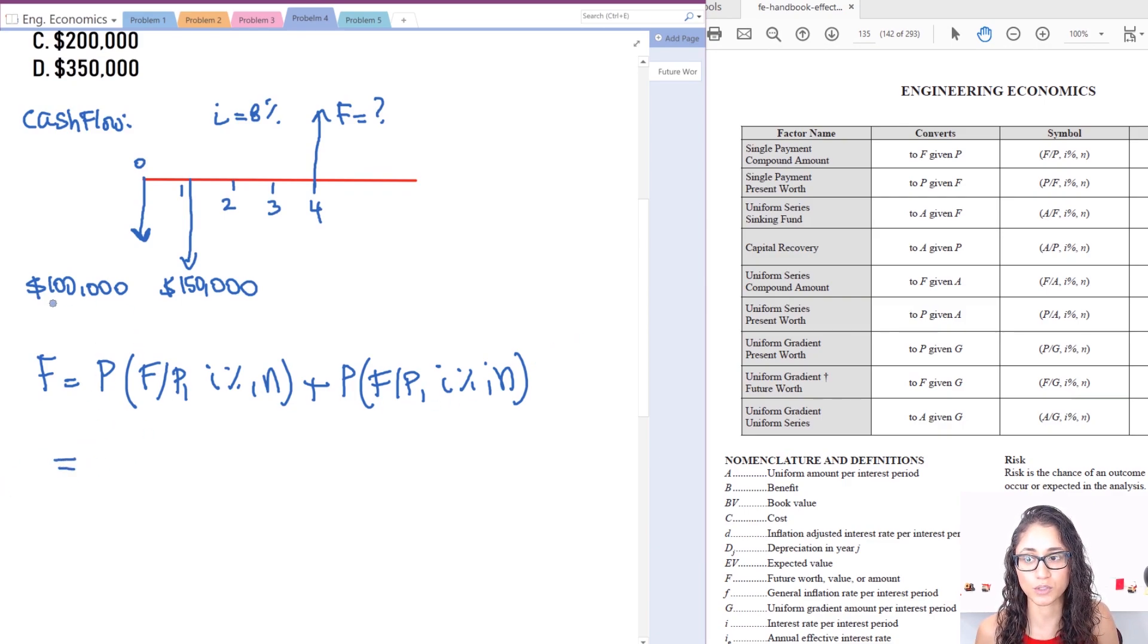Okay, so present worth. So let's do for the first one. So I have $100,000, and we have F to P, interest rate is 8 percent, and number of years is four, right? Because it's four years ago I deposited.